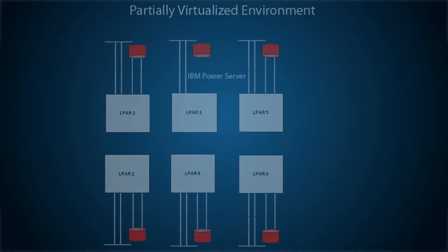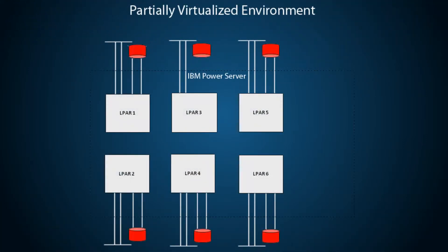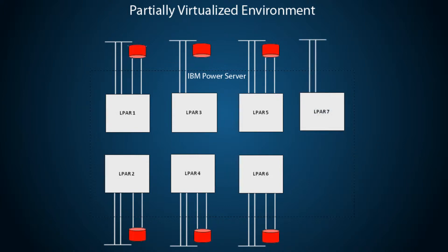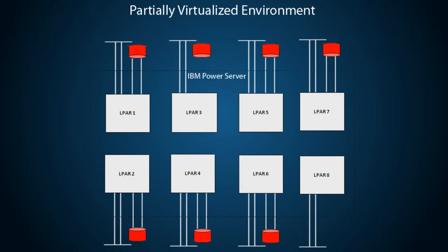Let's take a look at how a typical system with multiple LPARs might be set up. As you can see here, each LPAR has multiple physical connections including network, disk and tape. When you add an additional LPAR, you need to add additional physical connections as well. This means additional hardware such as adapters and expansion drawers is required for each LPAR added, along with added infrastructure costs with additional cabling and switch requirements.